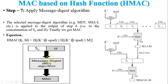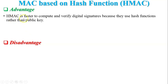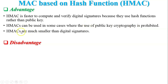Now let's discuss the advantages and disadvantages. First, HMAC is faster to compute and verify than digital signatures because it uses a hash function rather than public key cryptography. Second, HMAC can be used in cases where public key cryptography is prohibited. Third, HMACs are much smaller than digital signatures, so they can be easily calculated and appended to a message.